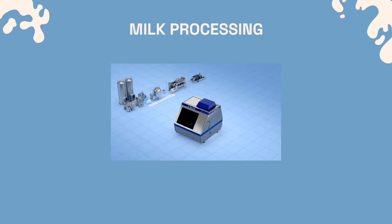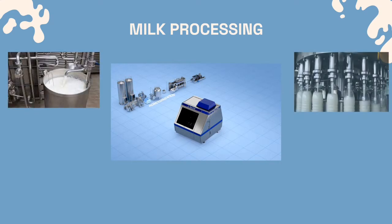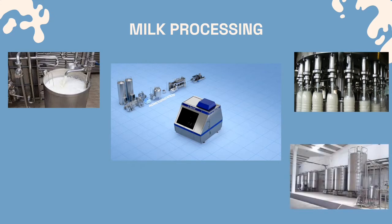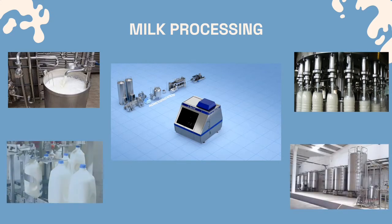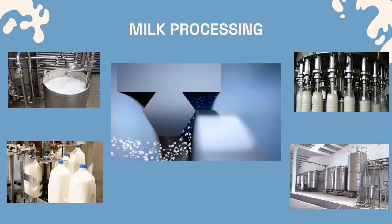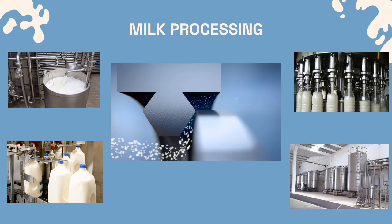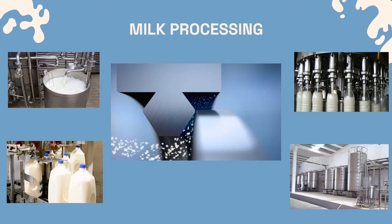As for the processing stage, whole fresh milk, once approved for use, is pumped into storage silos where it undergoes pasteurization, homogenization, separation, and further processing. The milk passes through a very small gap in a homogenizer, which breaks up the larger fat droplets. Homogenization prevents the fat droplets from rising to the surface and forming a layer of cream in the container.